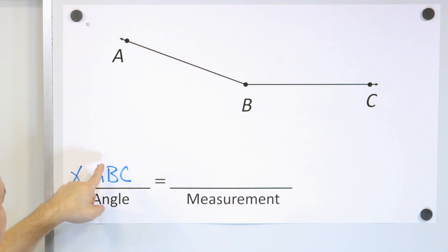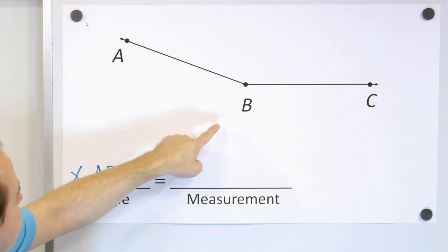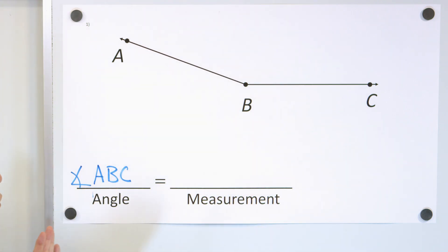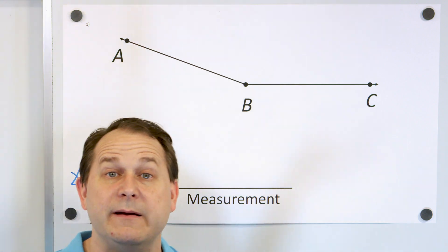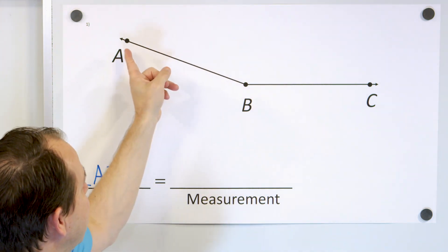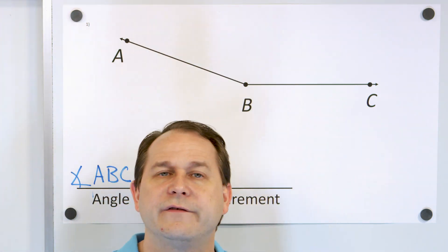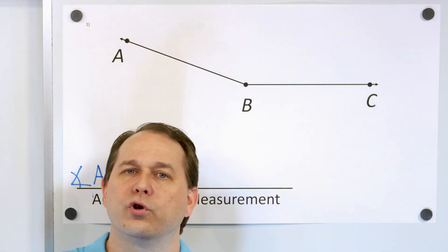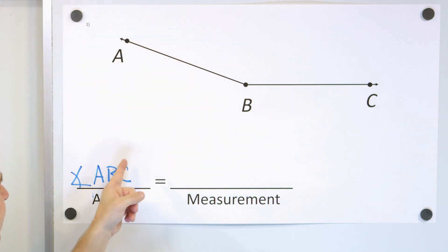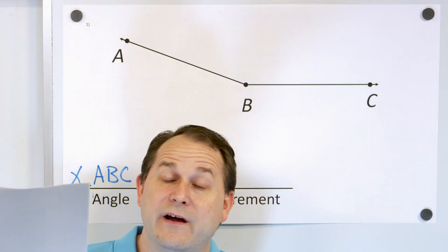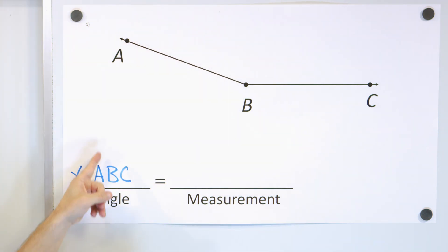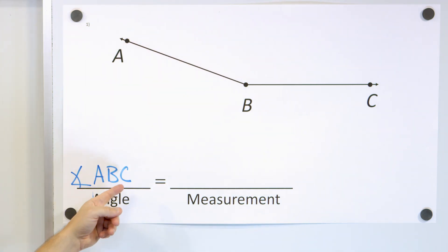Why is it called ABC? Because A is here, B is at the vertex in the center, and C is way over here. That's the way you name the angle. You could also name it angle C, B, A — either order is okay — but you have to make sure that the letter B is in the center, because B is where the rays come together. So we're going to call this angle ABC.